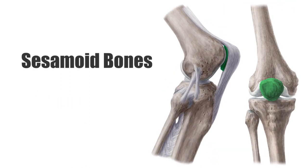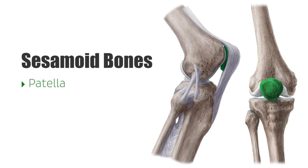Sesamoid bones are found at the end of long bones in the limbs, where the tendons cross. For example, the patella bone in the knee. They protect the tendons from excess wear by developing within the tendon and reducing friction.